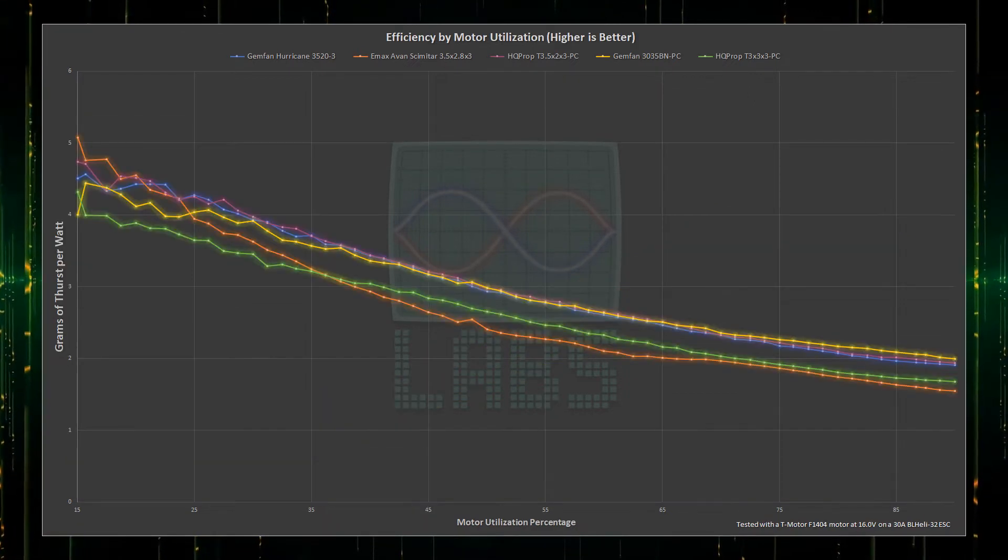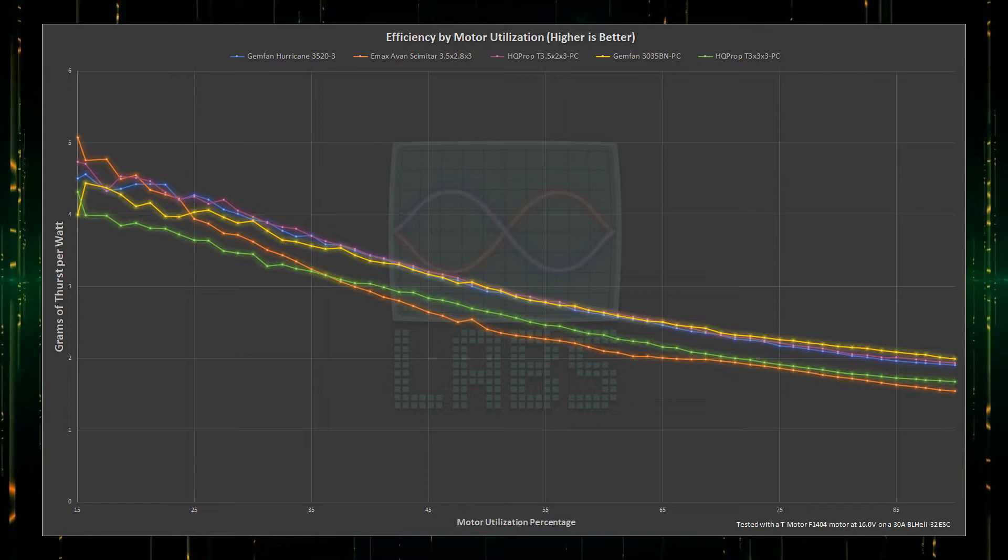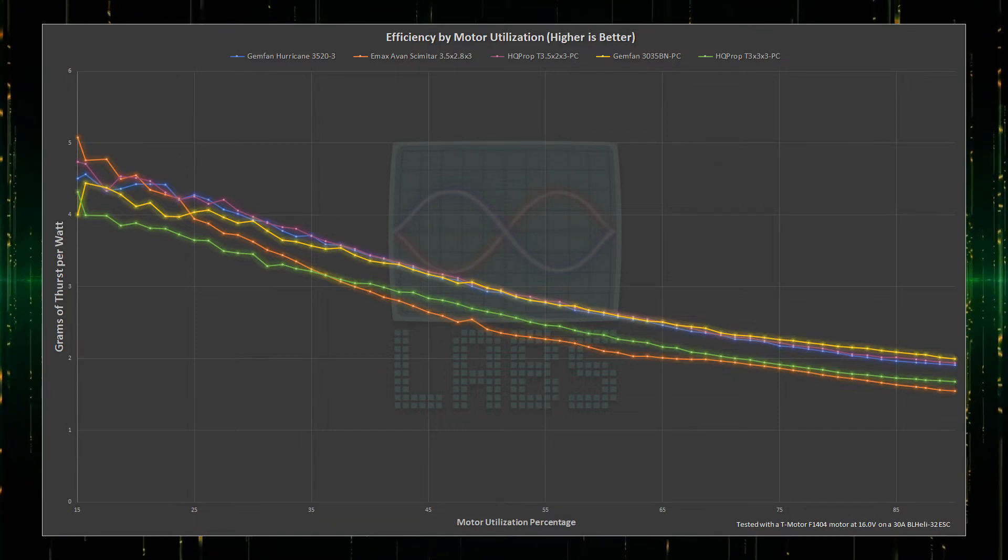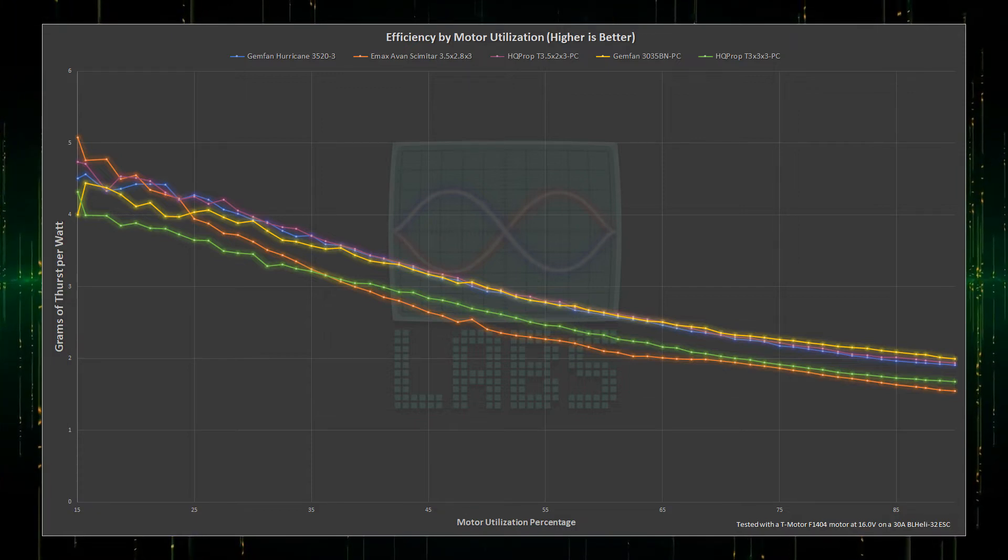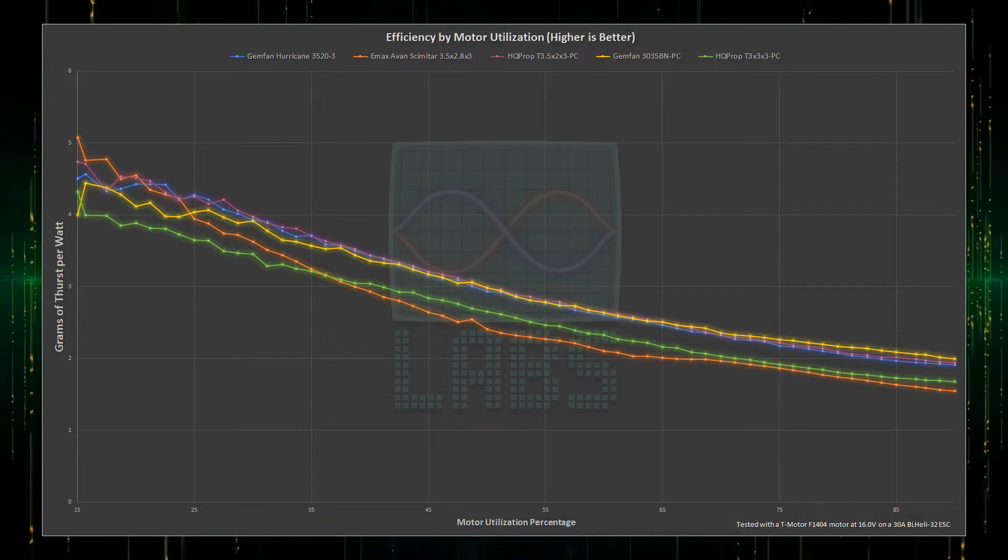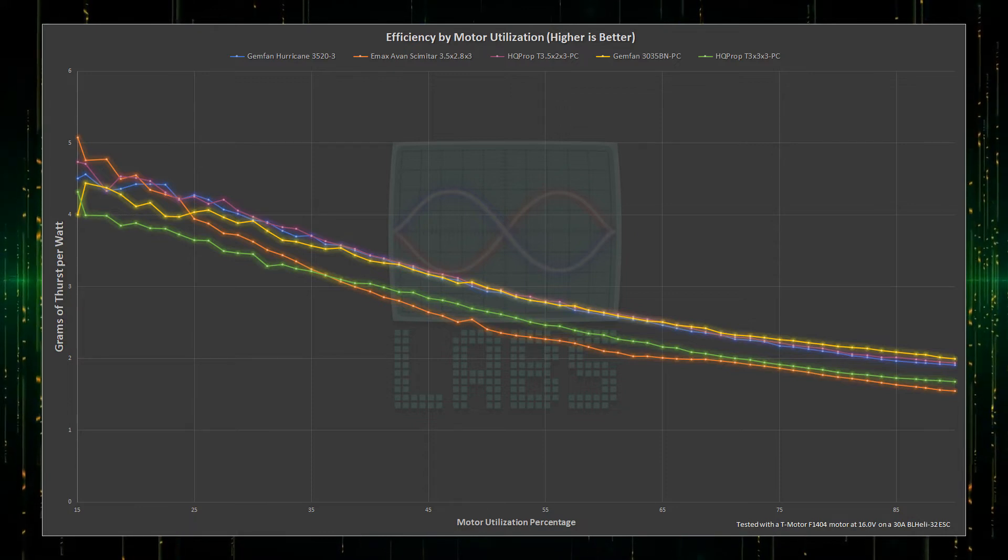Let's switch to efficiency. Yowsers! The efficiency of the Avan absolutely takes a nose dive as the throttle range increases, which is probably going to hurt, given how little extra top thrust it had. What is very exciting to see here, is that both the other 3.5-inch propellers are almost tied for overall throttle efficiency with the 3-inch efficiency leader, while giving out so much more thrust, and is more efficient in the lower throttle range, where efficiency helps the most.